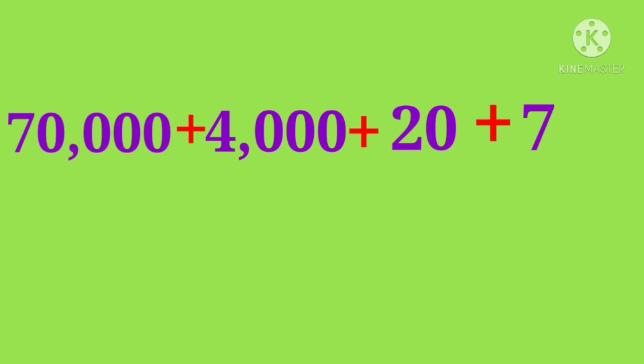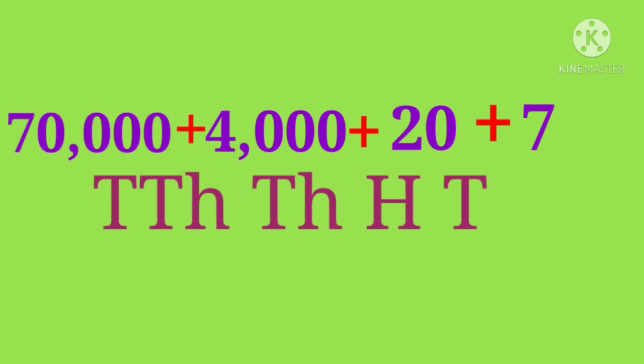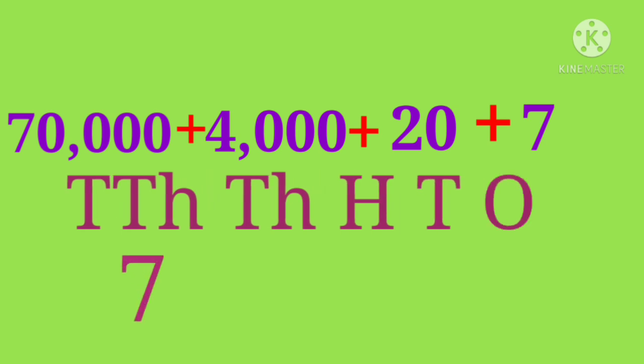Now first write down the place value starting from 10,000. Put 7 under 10,000. Under 1,000 write 4. Under 100s write 0. And under 10s write 2. And under 1s put 7. Put the comma between the 100 and the 1,000 place.